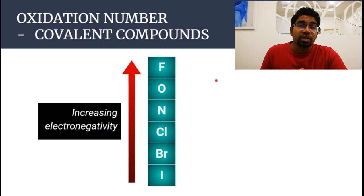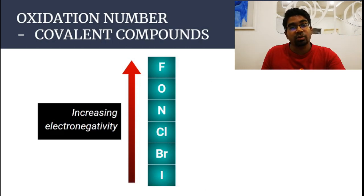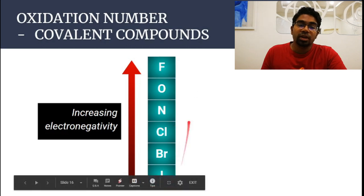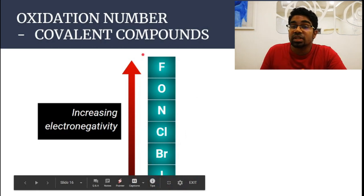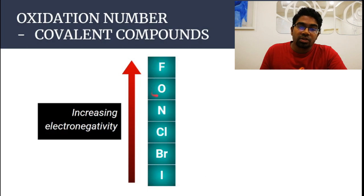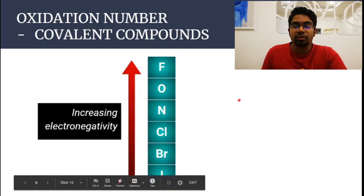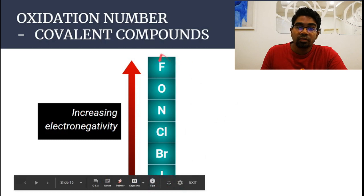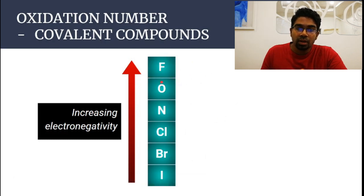When we look at Group 17 elements, electronegativity decreases down the group, which means fluorine is the most electronegative element in the periodic table. Going down: chlorine, bromine, and iodine have decreasing electronegativity. Below fluorine we have oxygen, which is the second most electronegative, then nitrogen, then chlorine, bromine, and iodine.